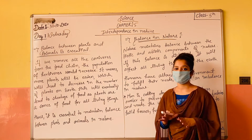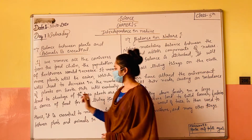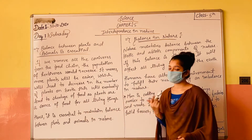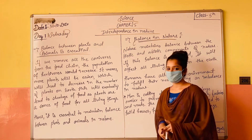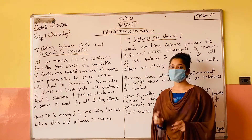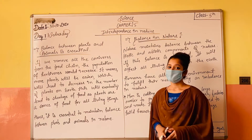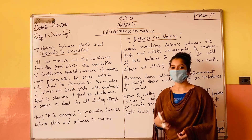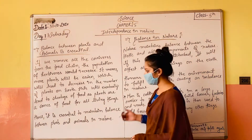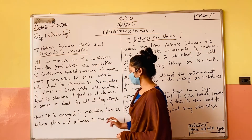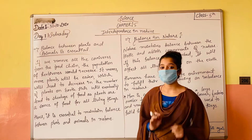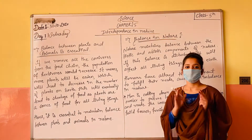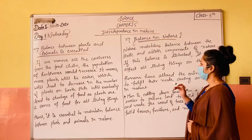Plants ki sankhya kam ho jaayegi hamaari prithvi pe. This will eventually lead to shortage of food, as plants are a source of food for all living things. Toh plants ki maatra kam ho jaayegi aur shortage of food bhi ho jaayegi, kyunki hamaara zyaadatar khaana plants se aata hai. Isliye, Hence it is essential to maintain balance between plants and animals in nature.